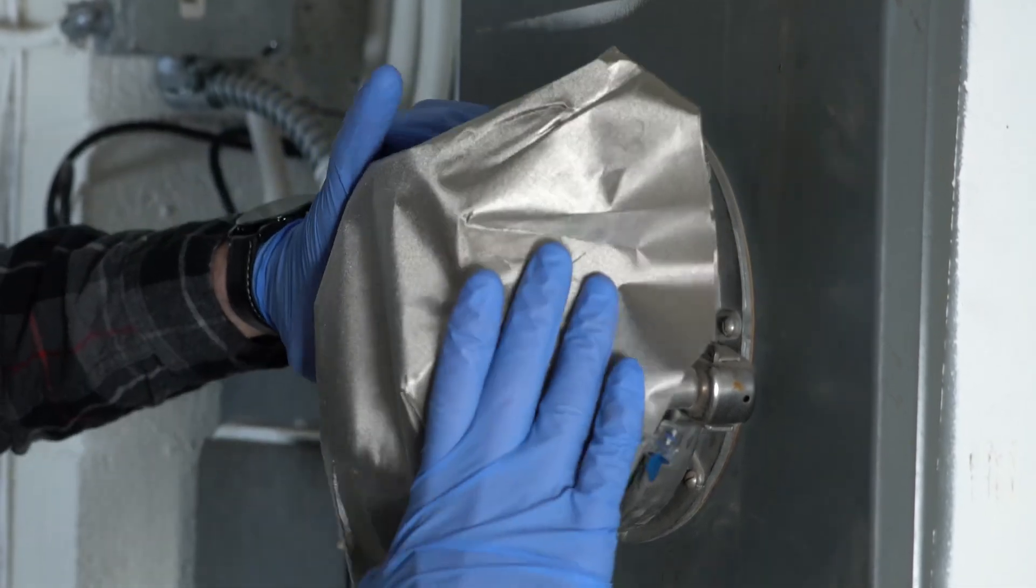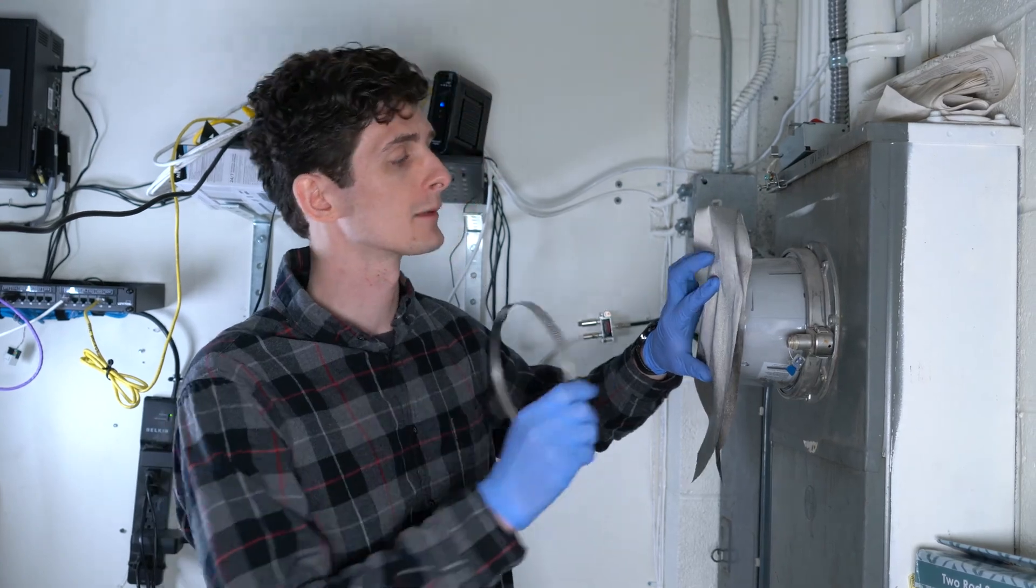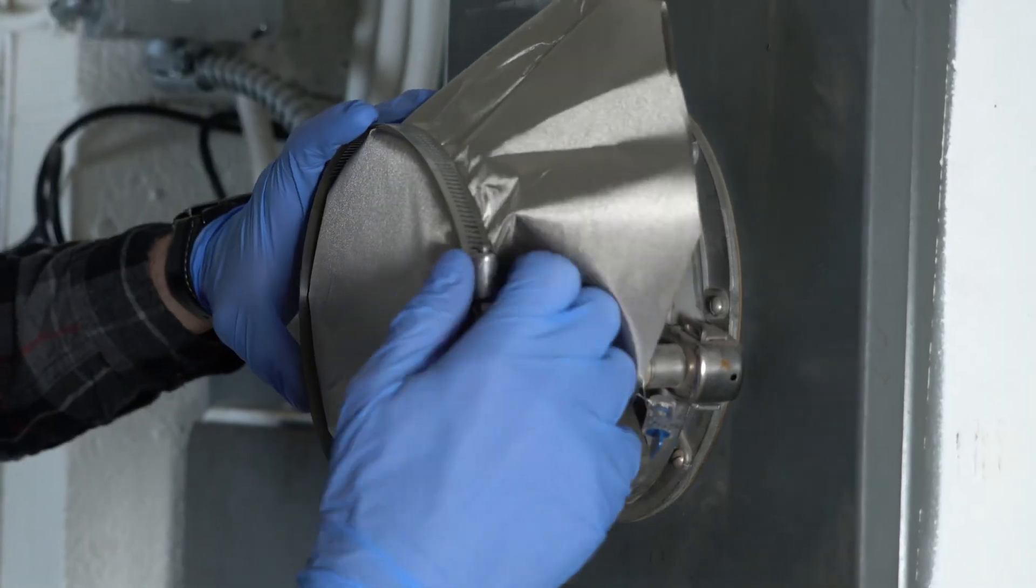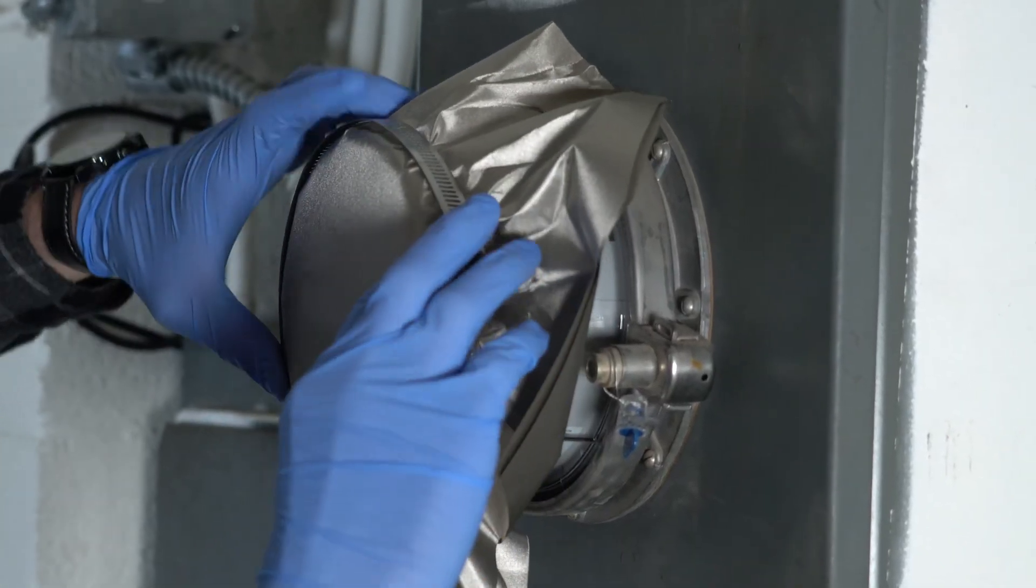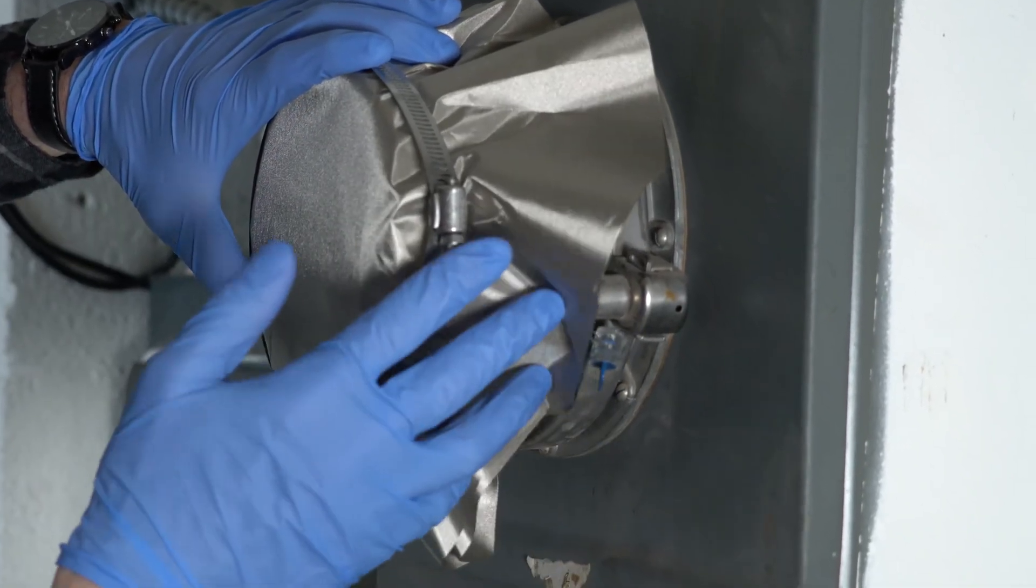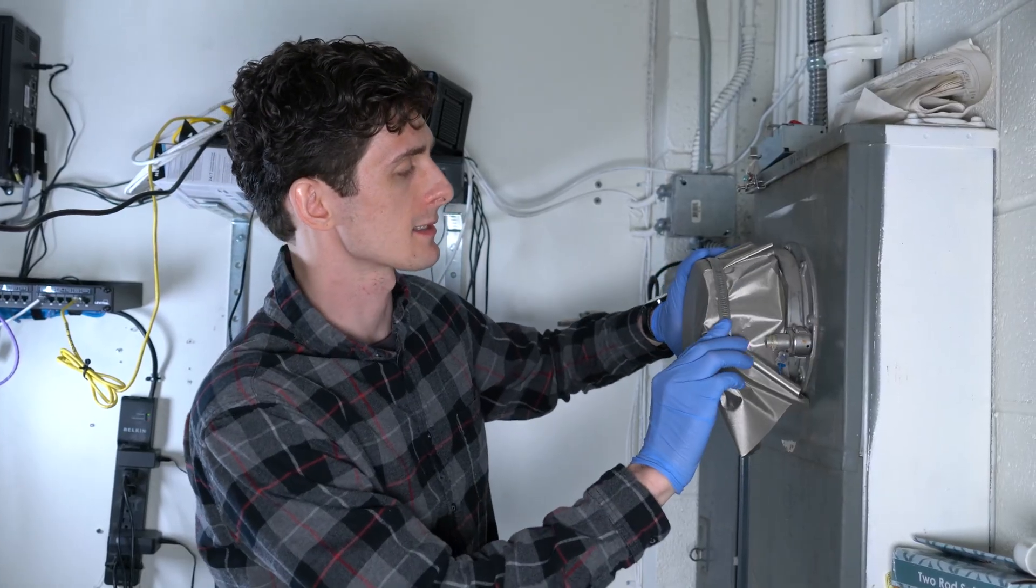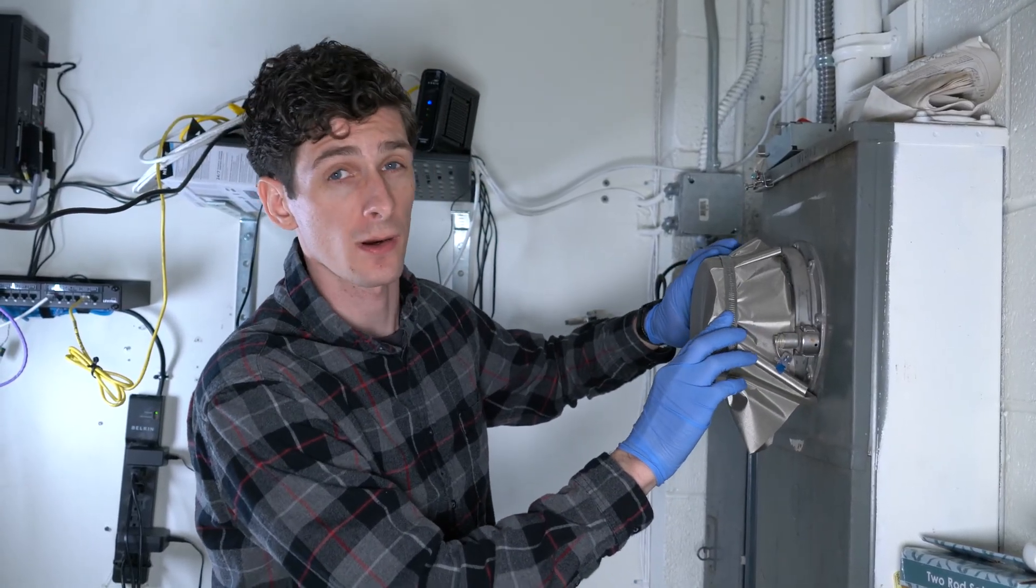Okay, and once you have it centered, go ahead and take your hose clamp that we looked at earlier and just slide it over the fabric. Now remember when you do this, you want the fabric to fully enclose the meter, so there shouldn't be any gaps. Gaps are just opportunities for RFs to leak out.